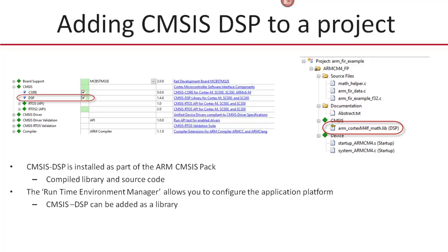To add the library, it's available as source code to download and integrate into your toolchain. Within the Keil tools, it's automatically included as part of the CMSIS pack, maintained by ARM. In the runtime environment manager within the Microvision IDE, we can open the CMSIS section and add the DSP library by simply checking the DSP box — this adds it to our project as part of the CMSIS standards. We then simply include the header file in our code and can start accessing all of the algorithms within the DSP library.